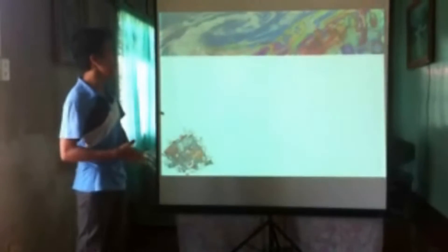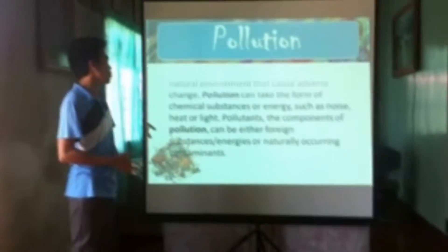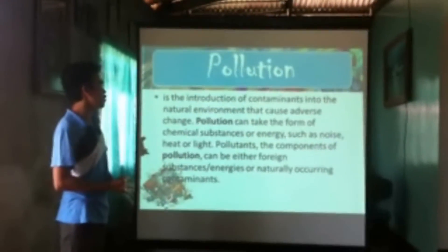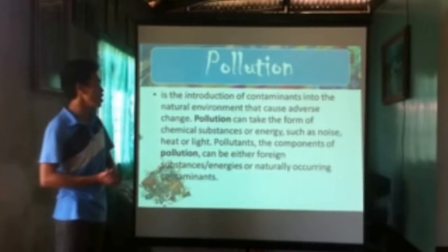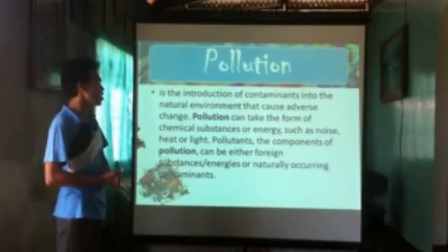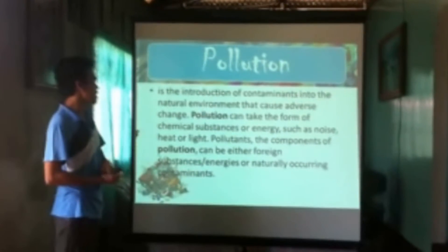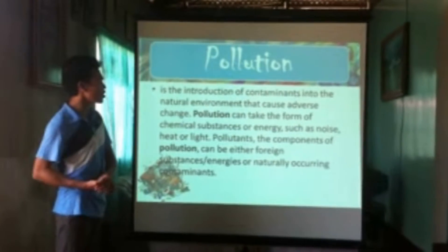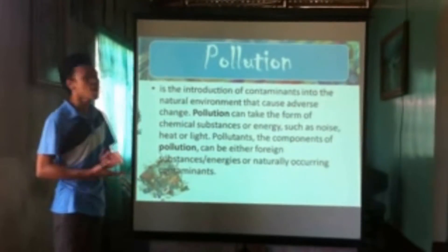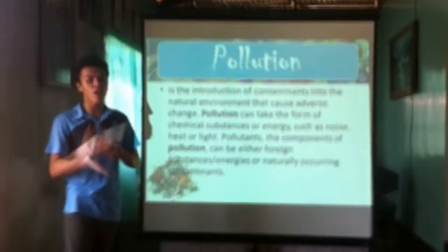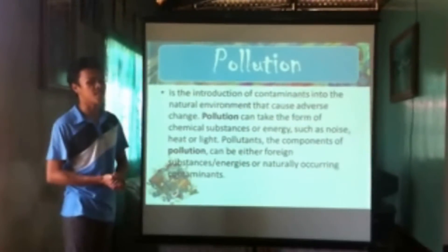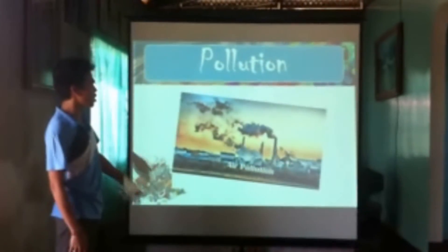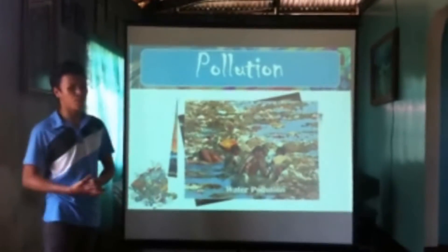Next, we will discuss pollution. Pollution is the introduction of a contaminant into the natural environment that causes adverse change. Pollution can take the form of chemical substances or energy, such as noise, heat, or light. Pollutants — the components of pollution — can be either foreign substances, energies, or naturally occurring contaminants. Pollution is caused by or is the effect of these pollutants. There are different kinds of pollution: air pollution, land pollution, and water pollution.